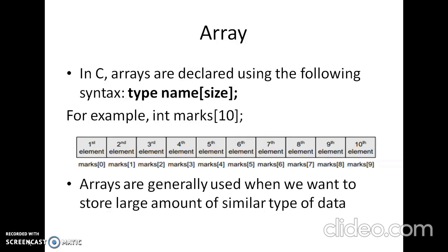We will see one example in C. Arrays are declared using the following syntax: type, name of the array, and maximum size it can hold. For example, int marks[10]. This means the above statement declares an array marks that contains 10 elements. In C, the array index starts from 0. This means the first element will be stored in marks[0], the second element in marks[1], and so on. Therefore, the last element, that is the 10th element, will be stored in marks[9].